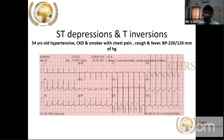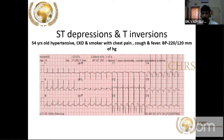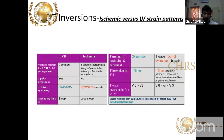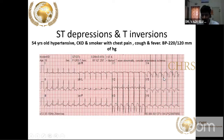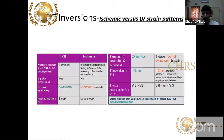In CKD and hypertensive patients presenting with chest pain, it is very difficult to differentiate. Criteria: symmetrical T wave inversion more often suggests ischemia. The overshoot phenomenon — where the ascending limb of the inverted T wave crosses above the baseline — represents T wave overshoot. When you have asymmetrical T wave inversion with overshoot, that means LVH. In ischemia, there is symmetrical T wave inversion without overshoot.